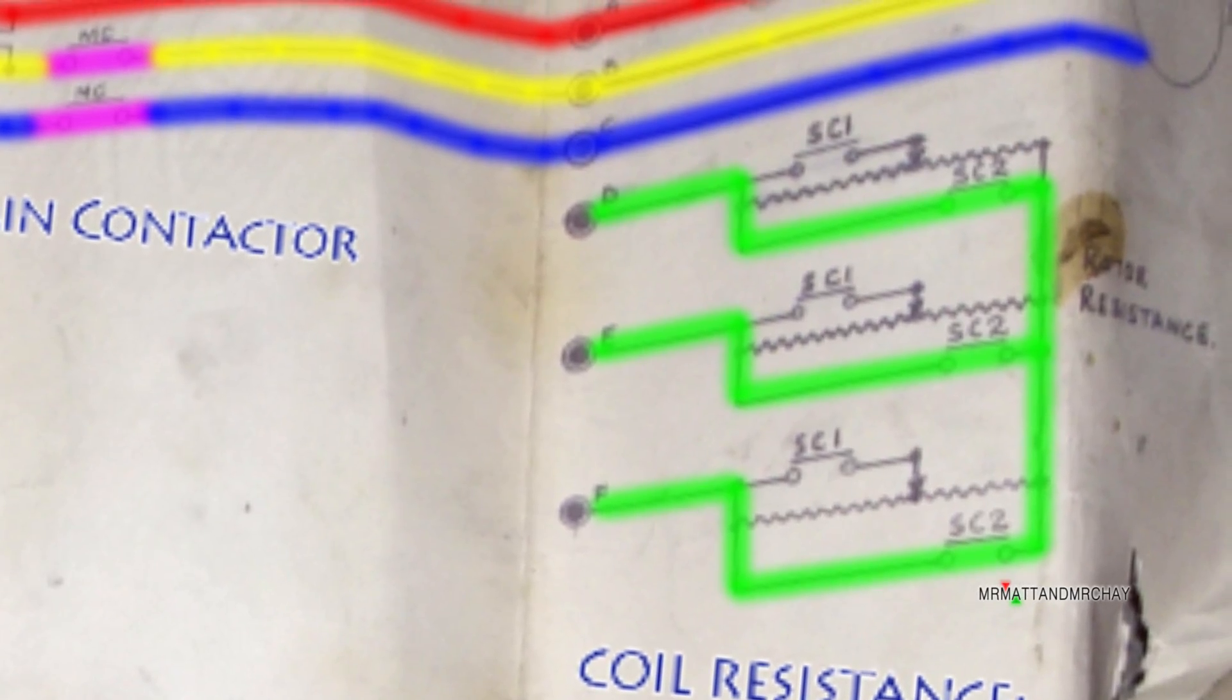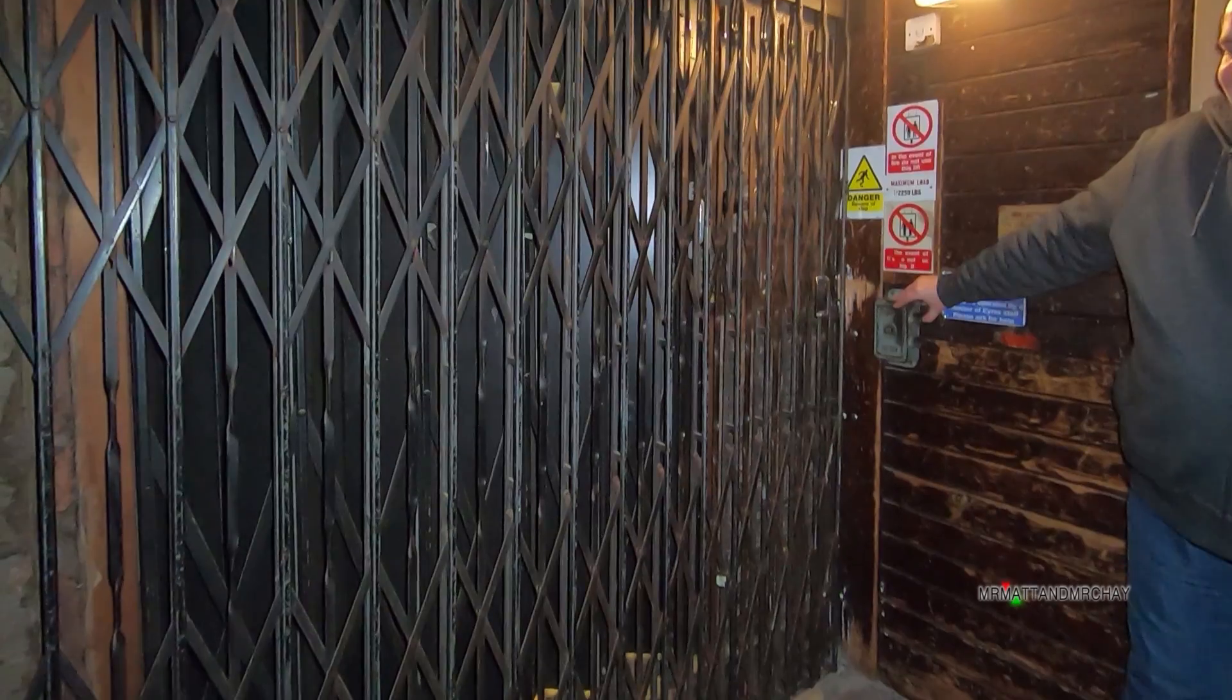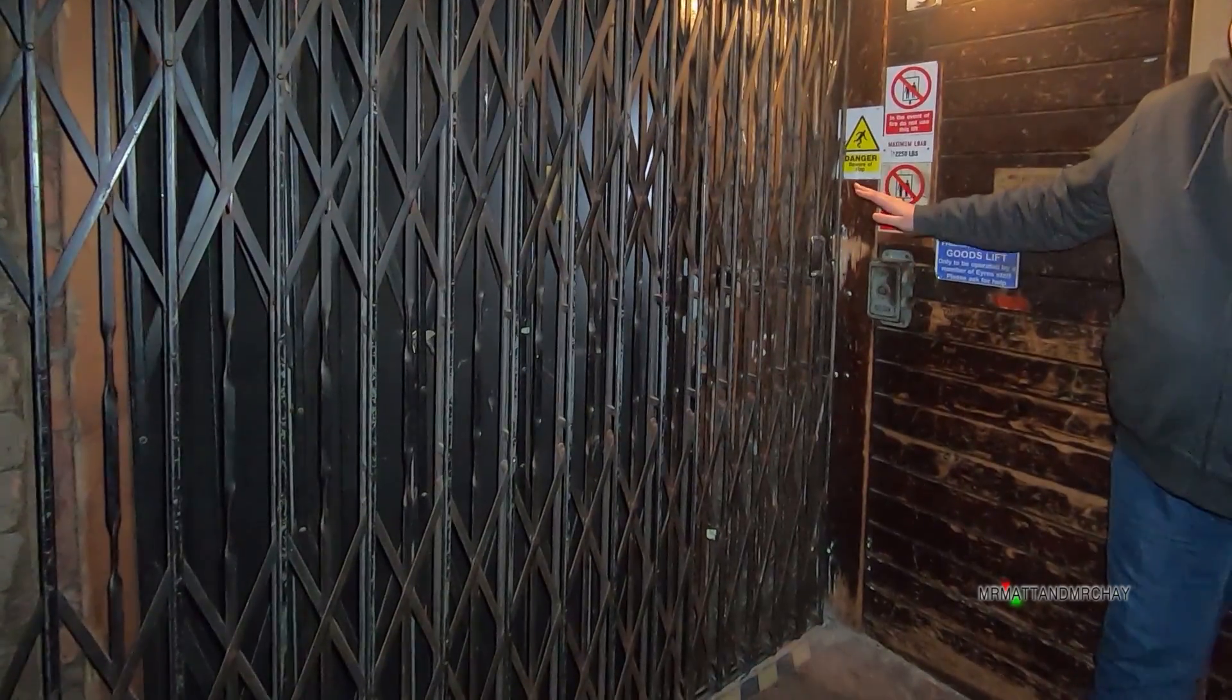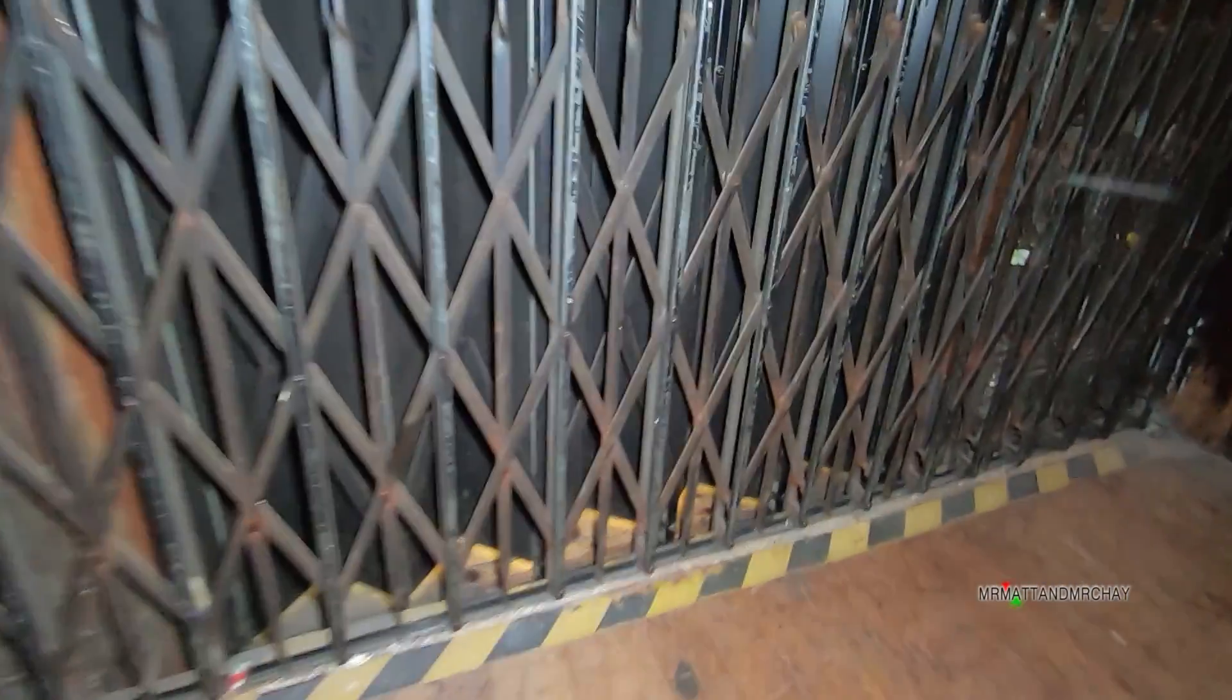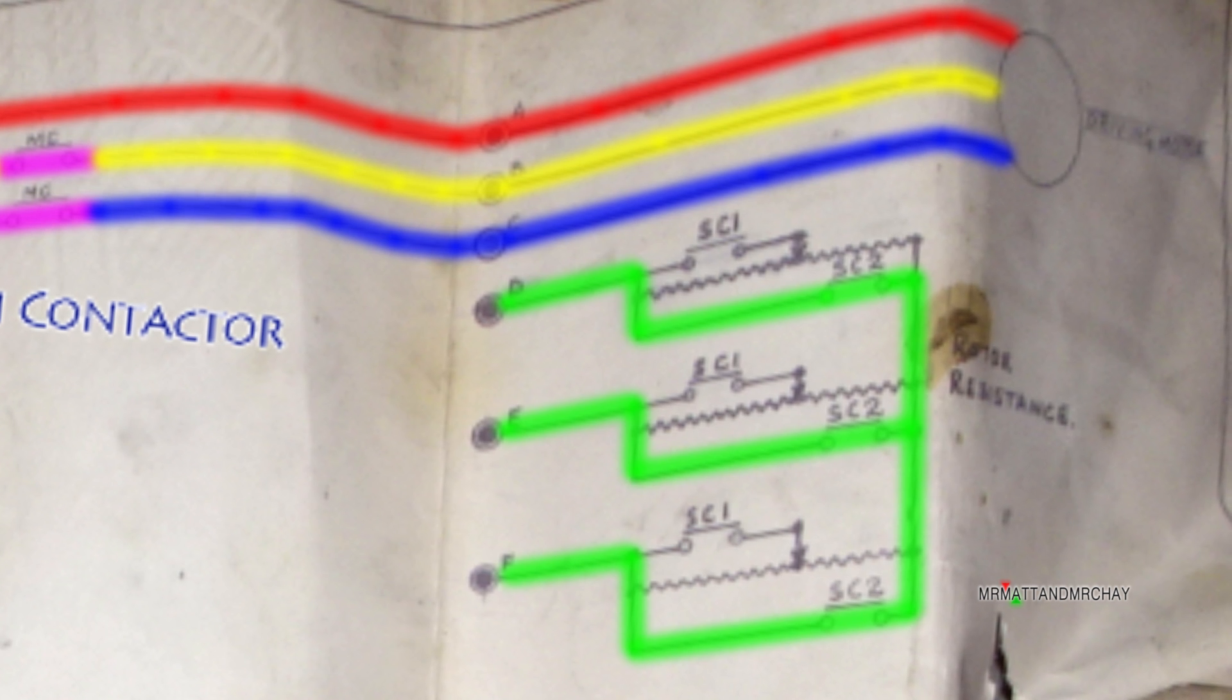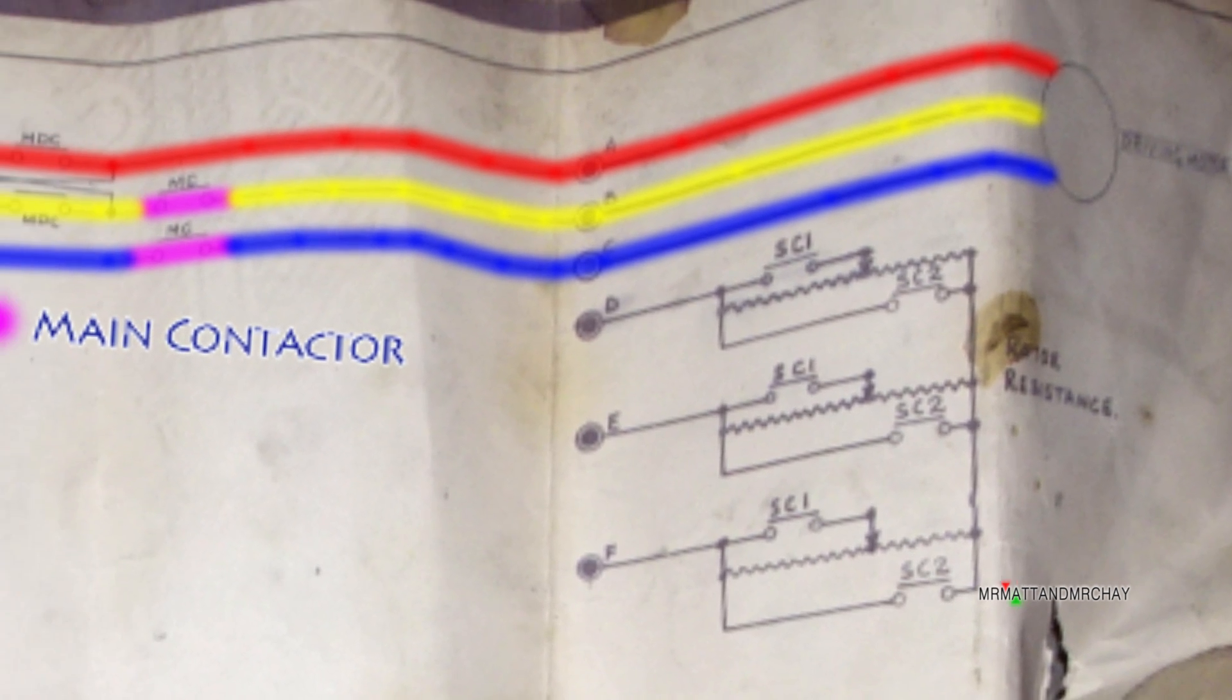When the lift arrives at a floor, or in this case when the operator of the lift takes his finger off the up or down button, SC1 and SC2 are deactivated, followed by the main contactor.